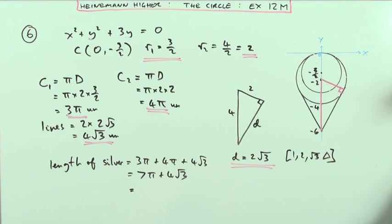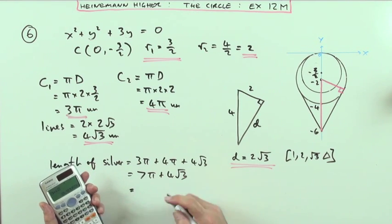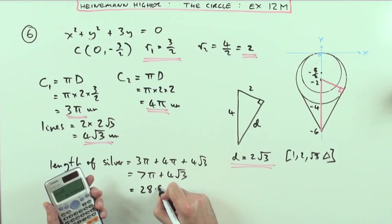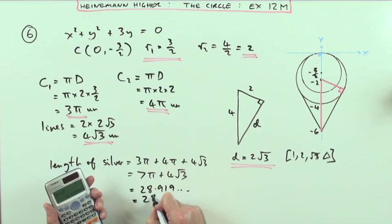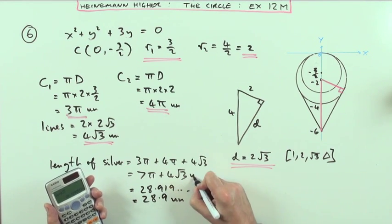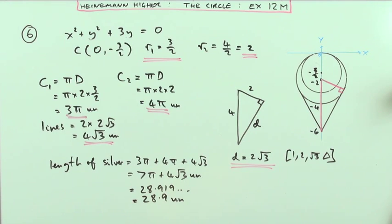Or, if you want it as a decimal, just put it into your calculator, and you get 28.919, etc., which is 28.9 units. So either of those forms. That being the exact answer, and that being the decimal approximation to three significant figures.